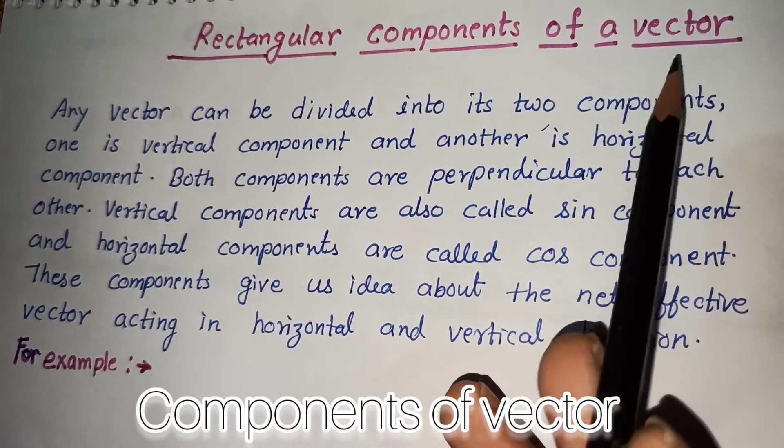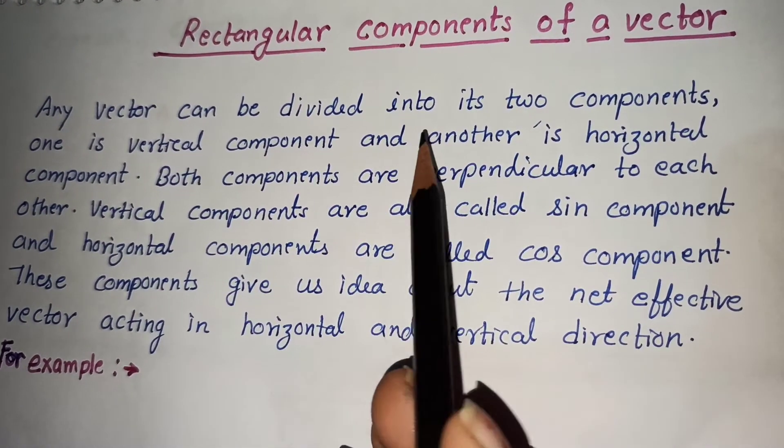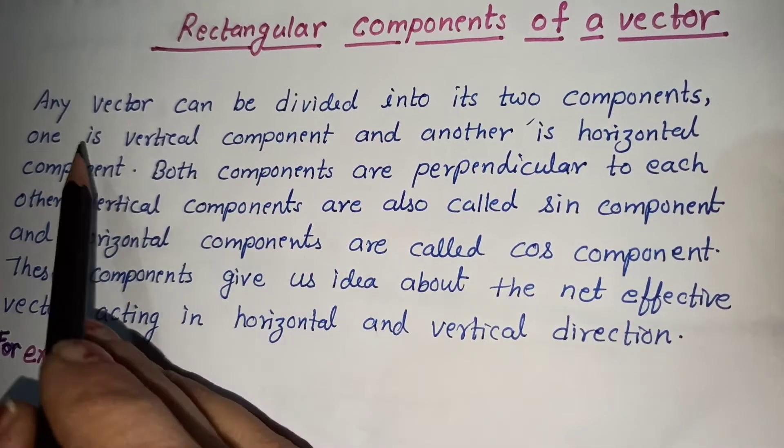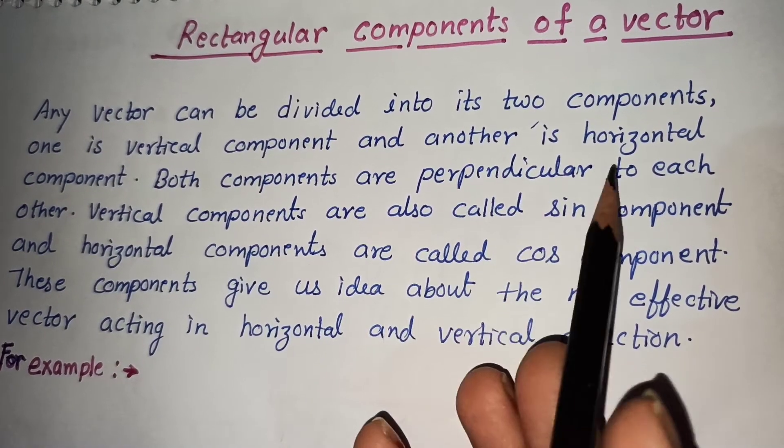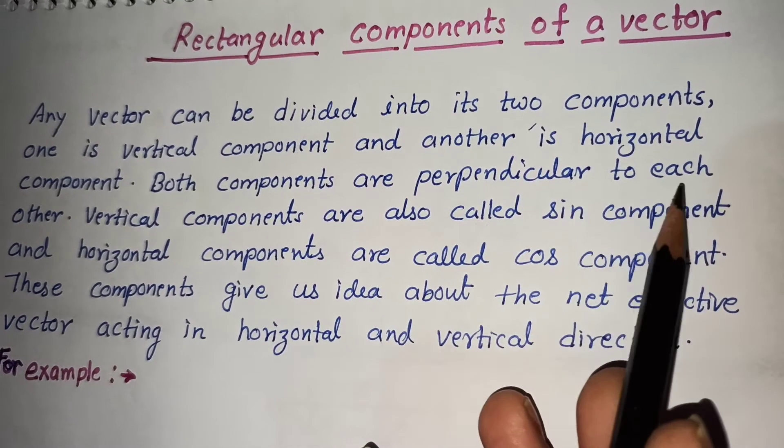Rectangular components of a vector. Any vector can be divided into its two components. One is vertical component and another is horizontal component. Both components are perpendicular to each other.